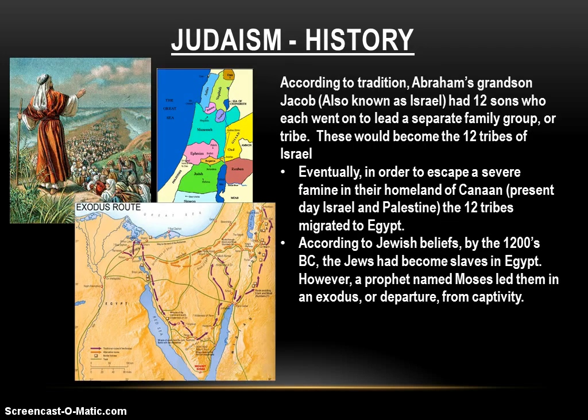According to Jewish tradition, Abraham had children in Canaan, and his grandson Jacob — also known as Israel — had 12 sons of his own, who each went on to lead their own family group or tribe. These 12 family groups or tribes would become the mythic 12 tribes of Israel that would populate the promised land, the land of Canaan.